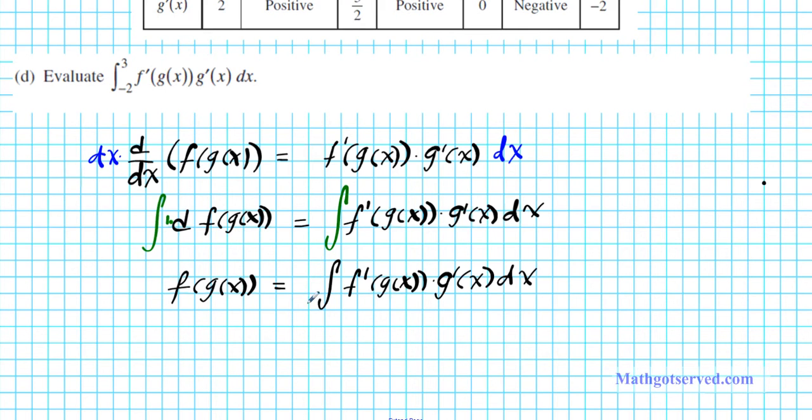Study the right side of this equation for a second. Isn't that exactly what we have here? So this is basically the reverse of the chain rule. You're integrating the result of the chain rule. If you integrate the result of the chain rule, you end up with the composite function f of g of x.